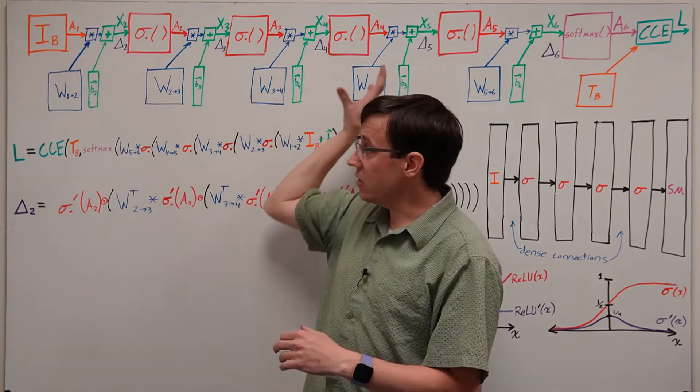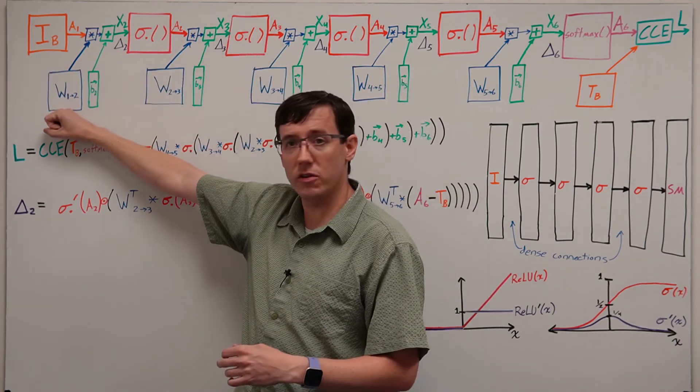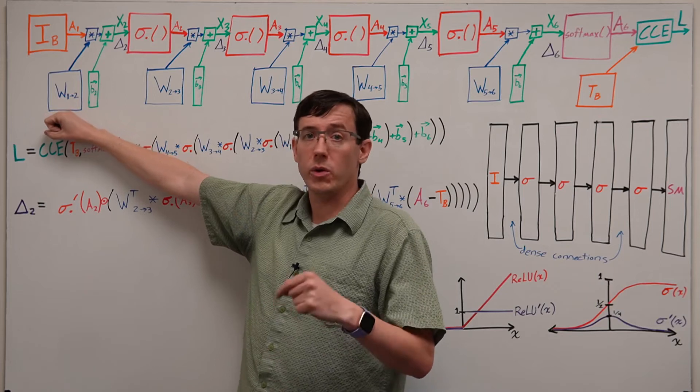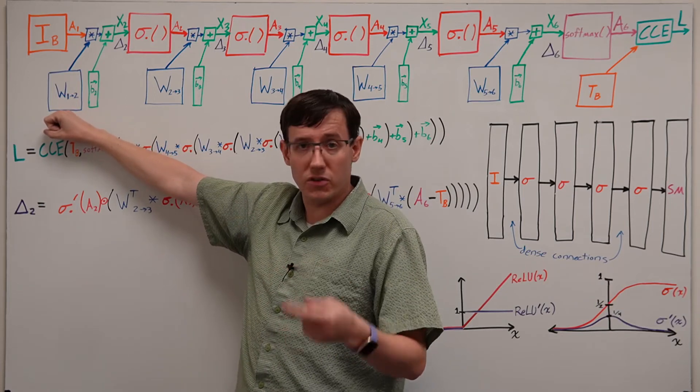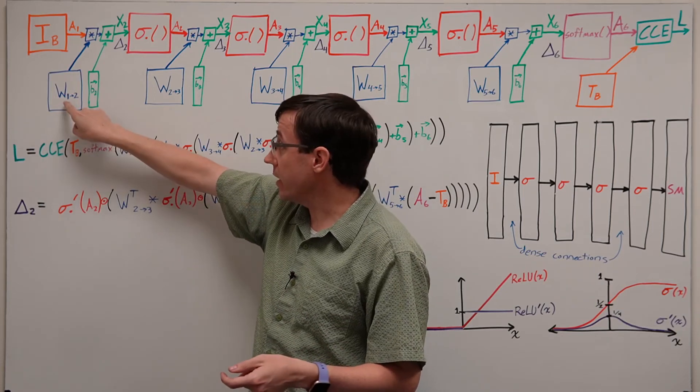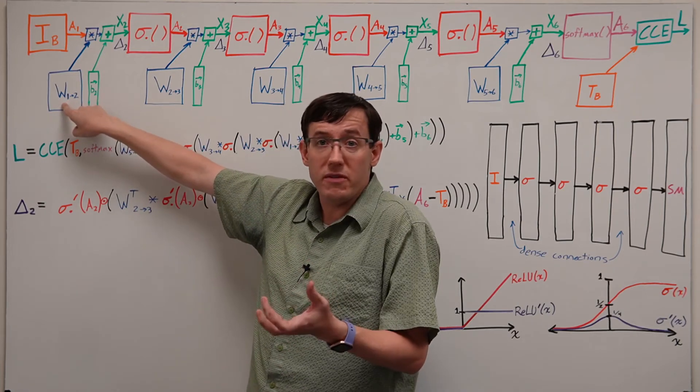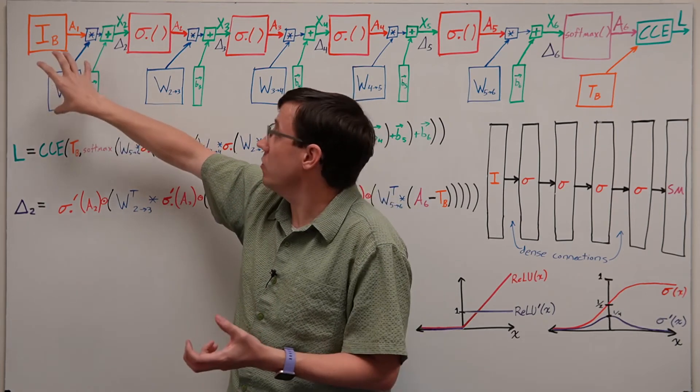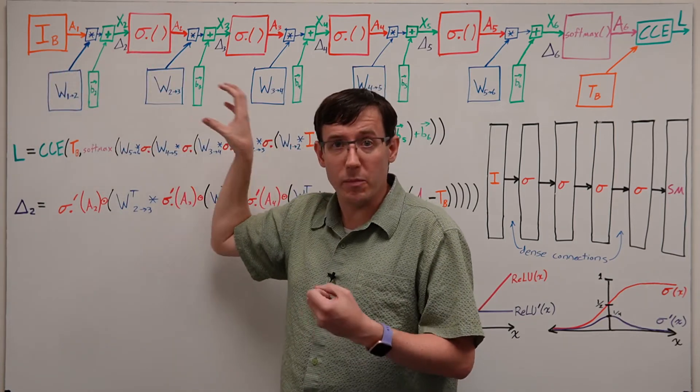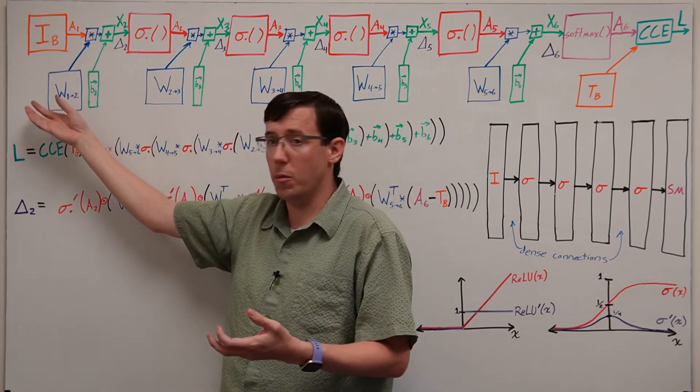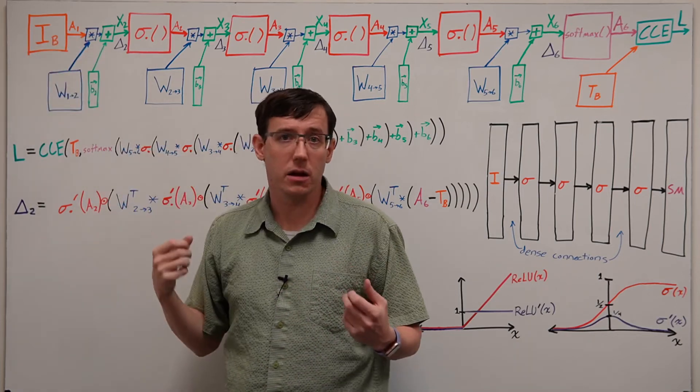But if the gradients have vanished by the time we get to the early layers, then when we take gradient descent steps, we will be only making extremely tiny changes to these weights, and so it will be very hard to move these first few weight matrices away from just being random and scrambling the data.